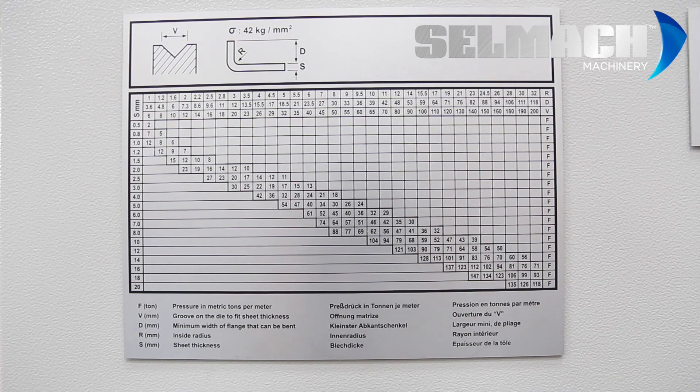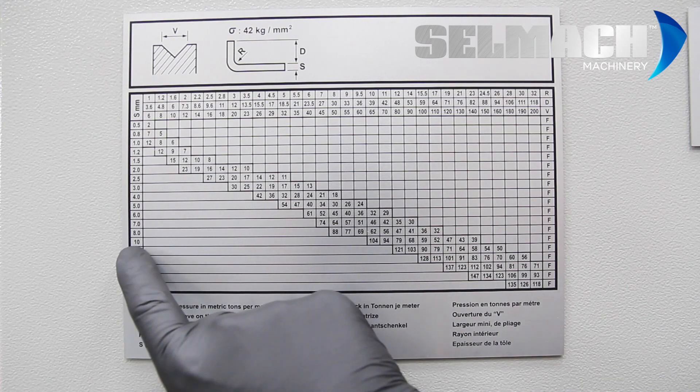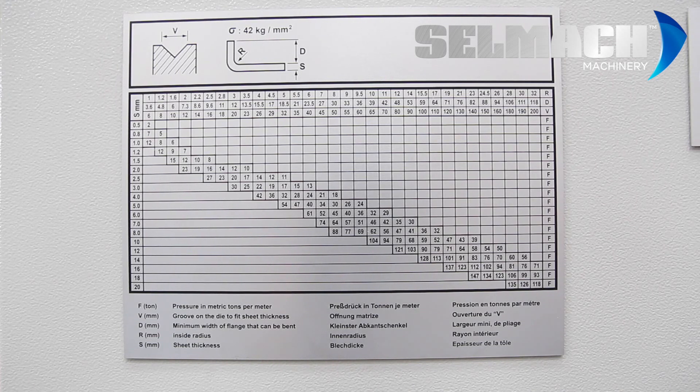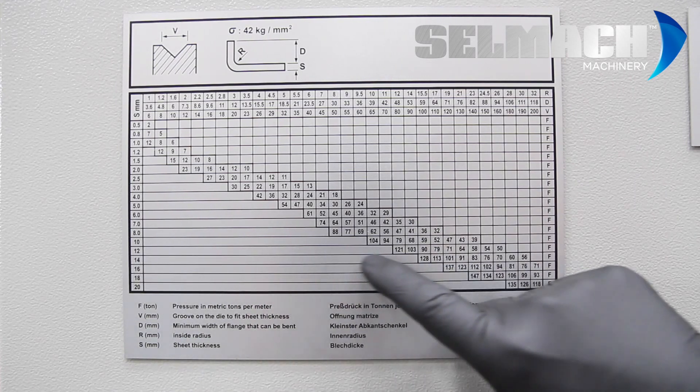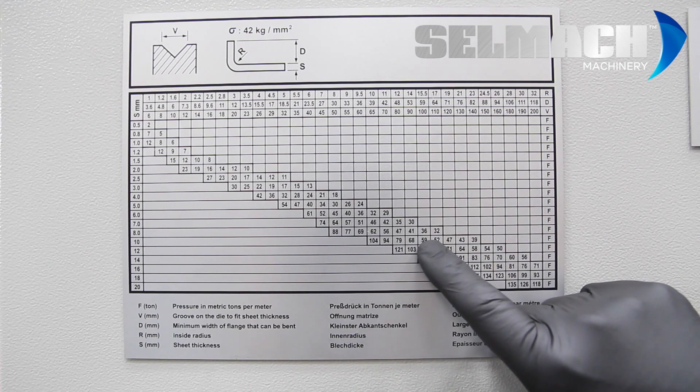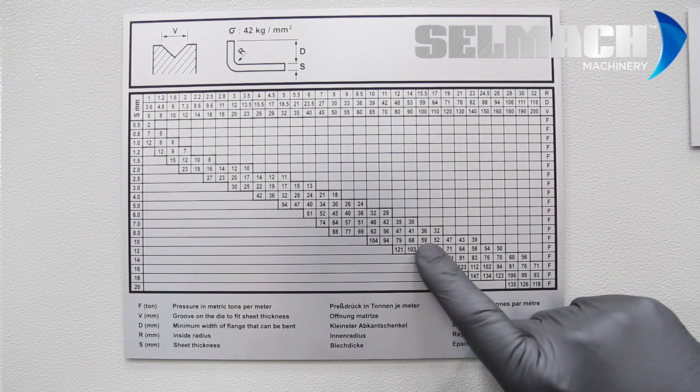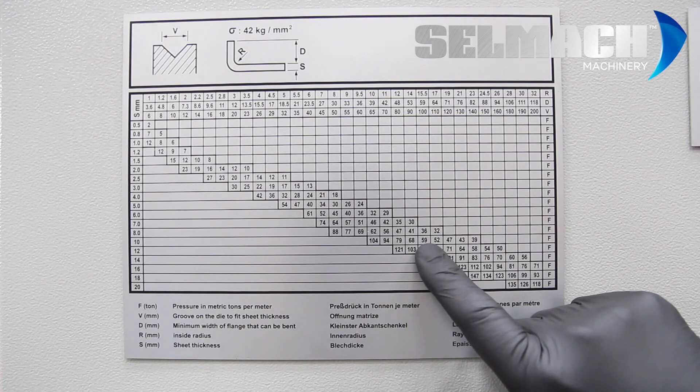If we were folding, say, 10mm plate, we times that by 10, we'd need a 100mm V. So if we look across and we look down to the 10mm and join the two together, it shows us that we need 59 tons per linear meter to fold 10mm plate. Thanks for watching.